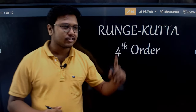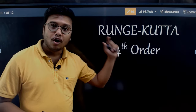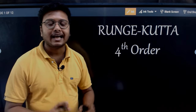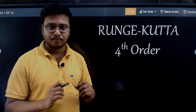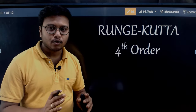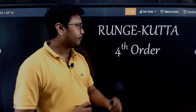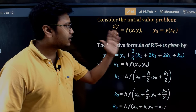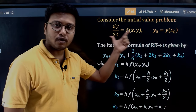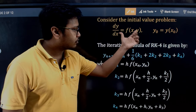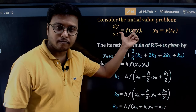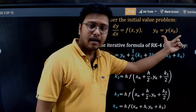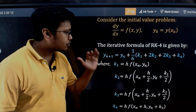Hello and welcome everyone to this new video on the fourth-order Runge-Kutta method for solving an initial value problem of a differential equation. First, let's take a look at the iterative formula. Suppose we have an initial value problem of the form dy/dx equals some function of x and y, with some initial conditions.